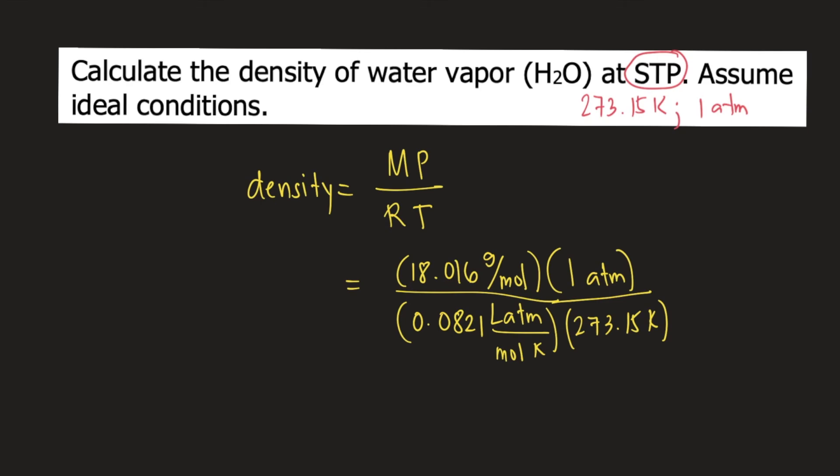Let's see how the units will cancel out. Moles will cancel, ATM will cancel, and Kelvin will cancel. So the unit for density is grams over liters, or gram per liter.